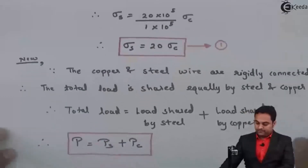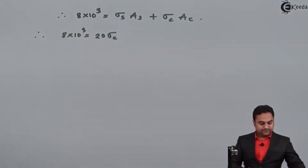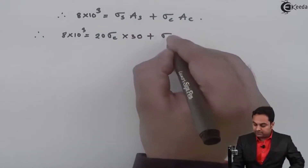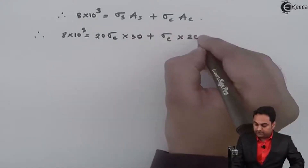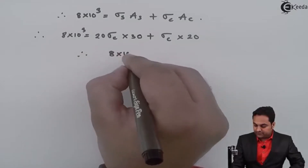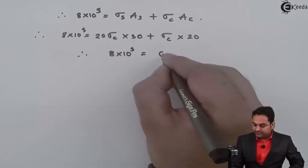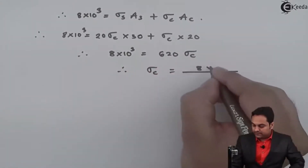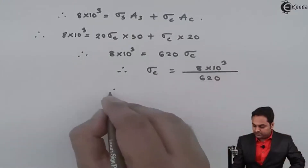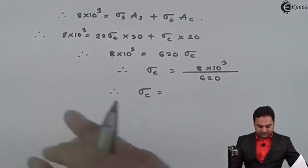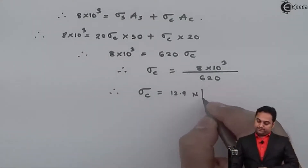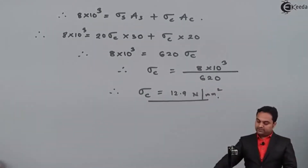Substituting: 8 × 10³ = 600σ_c + 20σ_c = 620σ_c. Therefore σ_c = 8 × 10³ / 620, which comes out to be 12.9 N/mm². This is the first answer — stress in copper is 12.9 N/mm².